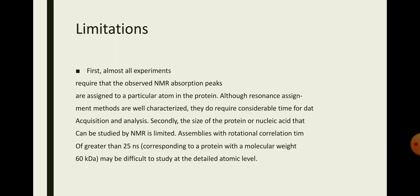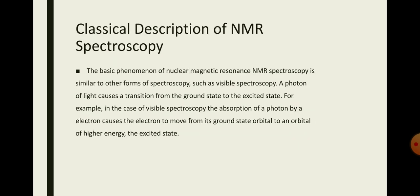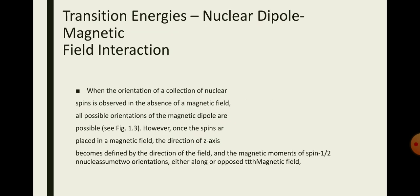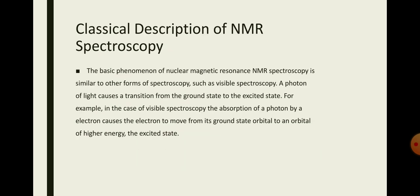Moving on to the classical description of NMR spectroscopy and transition energies, nuclear dipole-magnetic field interaction. The nucleus consists of elementary particles called neutrons and protons which contain an intrinsic property called spin.